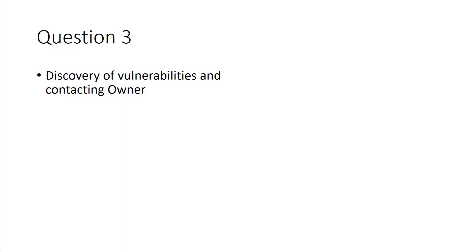Let's assume you were testing a public application and you came across a vulnerability. What should you do? Within the CEH material, they push very heavily on only doing this on networks or systems that you have permission. But this question kind of didn't say you had permission. So ethically and morally, what should you do? If you find a vulnerability on a public site, you should notify the owner — say, hey, I was testing and I found this.